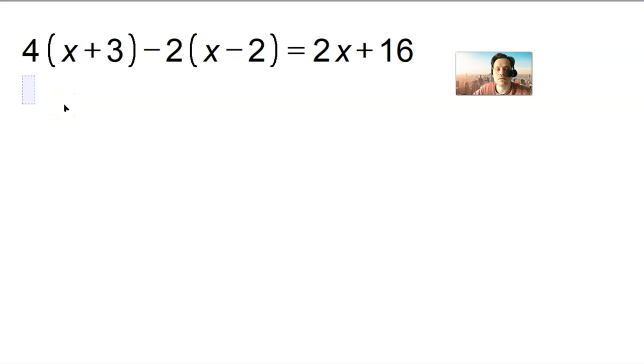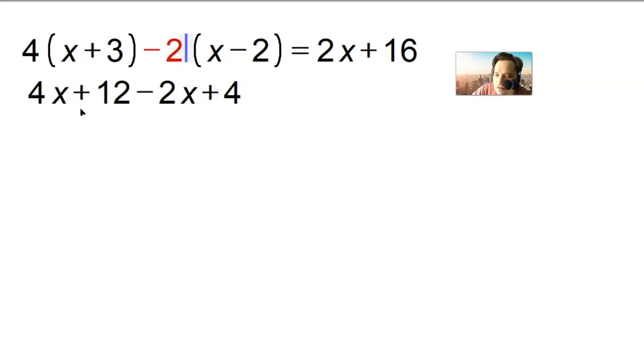Now let's finish up with this one here. A bit more challenging, but don't get overwhelmed. Just focus, internalize, process. I distributed 4. I'm going to have 4x plus 12 and then minus 2x plus 4. I distributed this one and I distributed this one. That's why it's 4x plus 12 minus 2x plus 4. On the right side I have 2x plus 16.